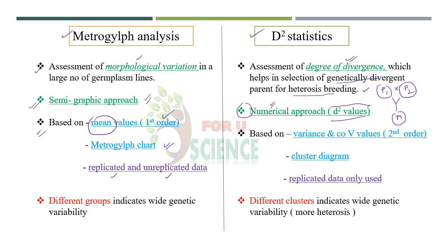In the case of D² statistics, we use second-order statistics — variance and covariance. In metroglyph we use a metroglyph chart, whereas in D² statistics we use a cluster diagram. For D² statistics, only replicated data can be used for analysis. In both cases, wide divergence indicates wide-ranging variability — in metroglyph, different groups indicate a wide range, and in D² statistics, different clusters indicate a wide range of genetic variability, giving maximum heterosis.